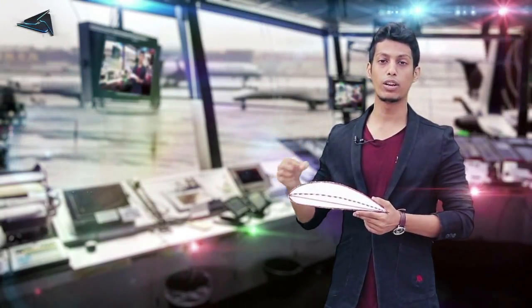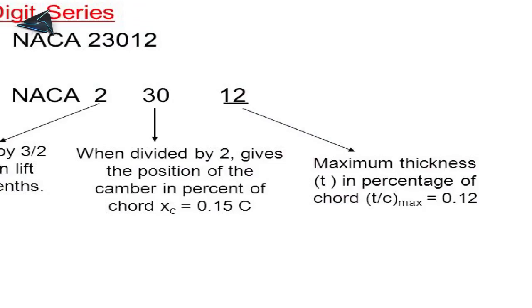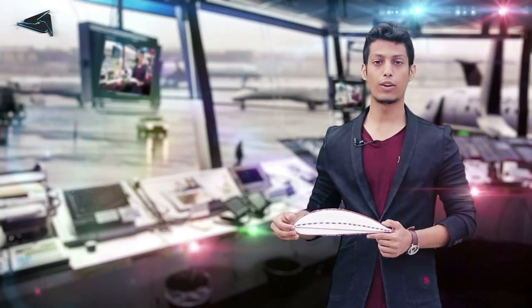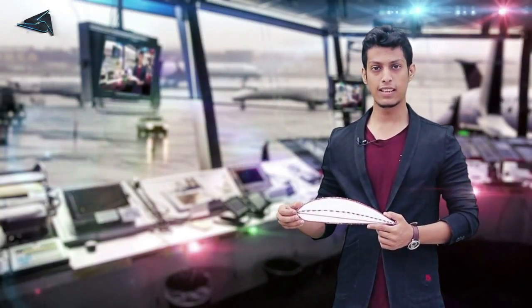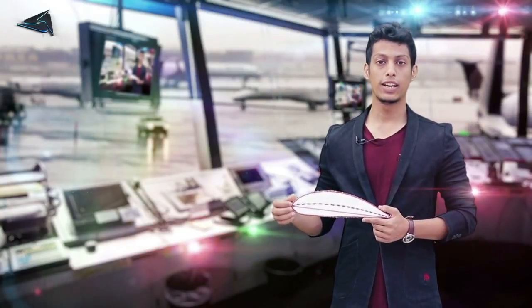In a 5-digit NACA airfoil, the first digit gives the design lift coefficient — multiply by 3/2 to get the actual design lift coefficient. The remaining digits follow a similar pattern to the 4-digit series for camber location and thickness. So for the 5-digit versus 4-digit airfoil, the third number can change — and moving to the 6-digit NACA airfoil series.